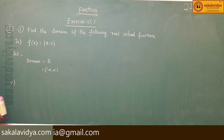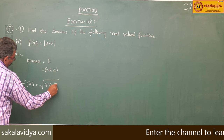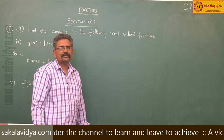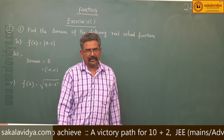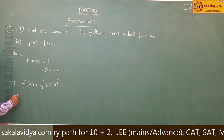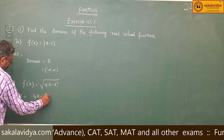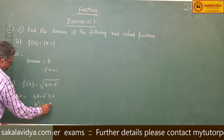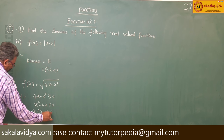Fifth problem: f of x is equal to root of 4x minus x square. To define root of 4x minus x square, we need 4x minus x square to be greater than or equal to 0. Multiplying by minus 1: x square minus 4x less than or equal to 0, giving x into x minus 4 less than or equal to 0.